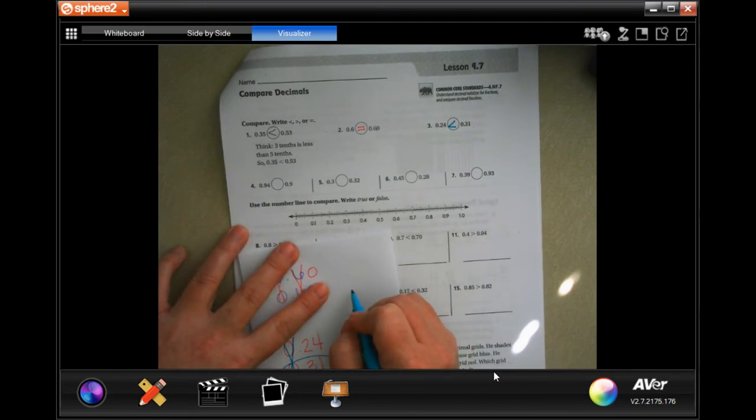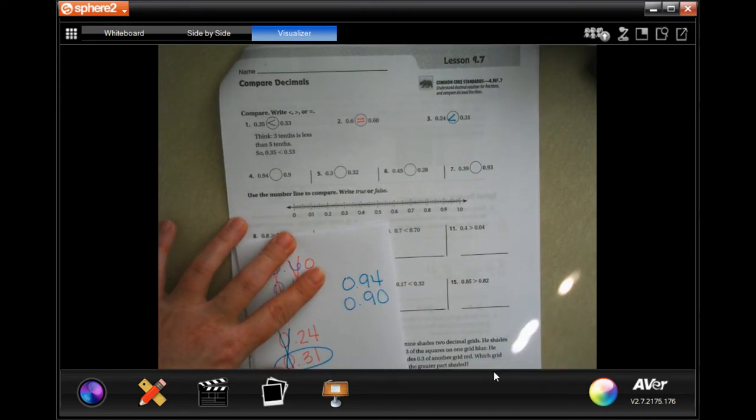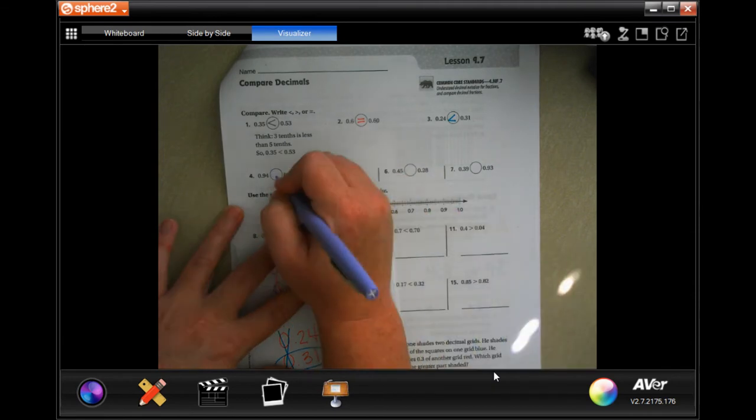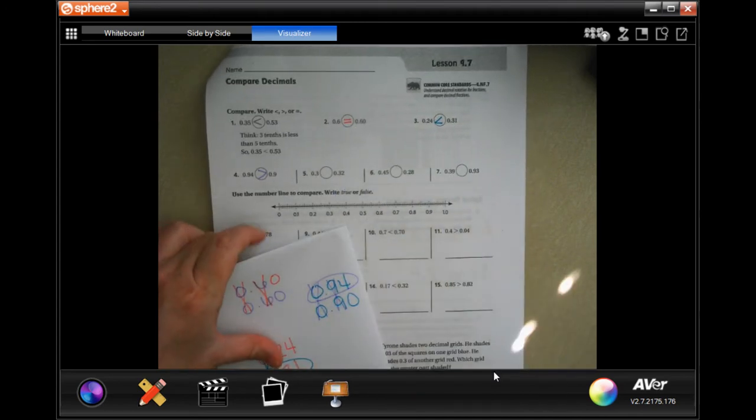So, number four says 0.94 or 0.9. Well, if you wanted to, you could add a zero there, just so that you have the same amount of numbers. It doesn't change it. Zeros are the same. Nines are the same. Oh, that one's got a four. That one's bigger. So, go ahead and do that for five through seven.